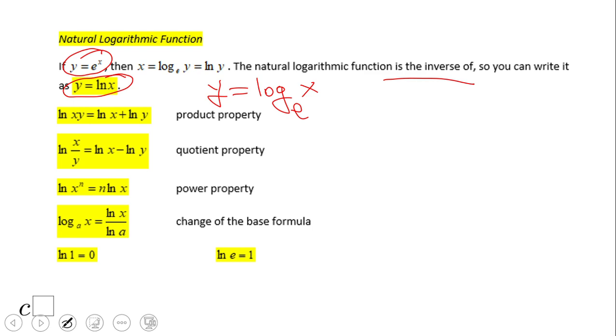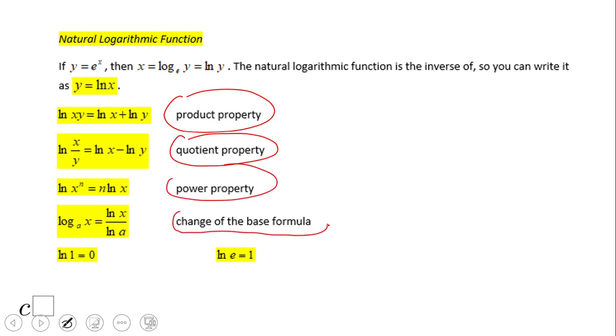The product property, the quotient property, the power property, and the change of base formula. In the change of base formula, we can use the natural log as the new base. Natural log of 1 is 0, and natural log of e is 1. So let's see how this works.